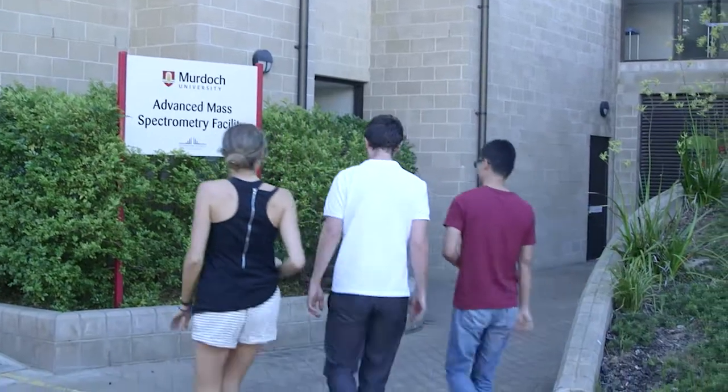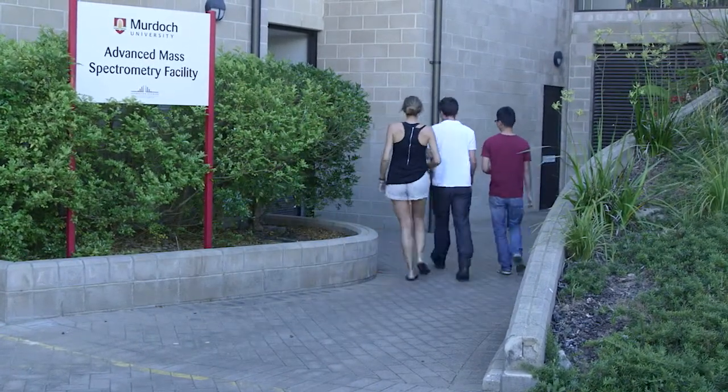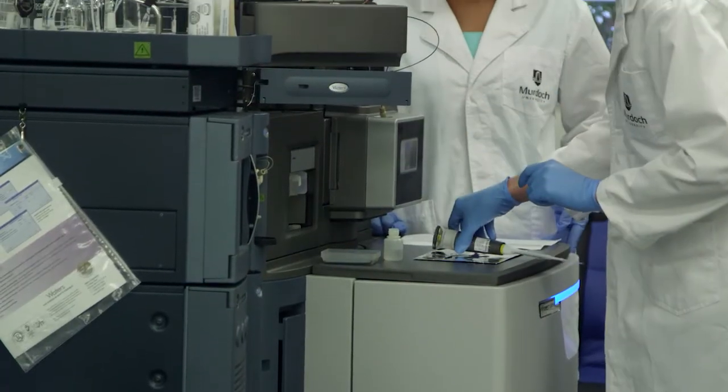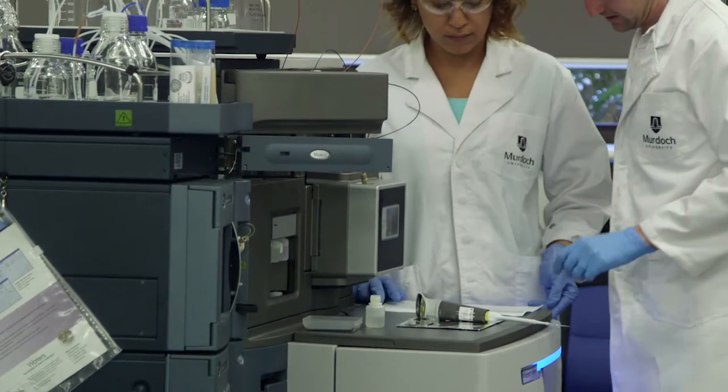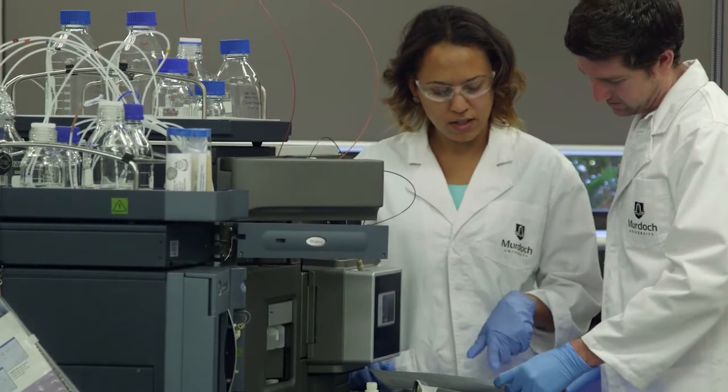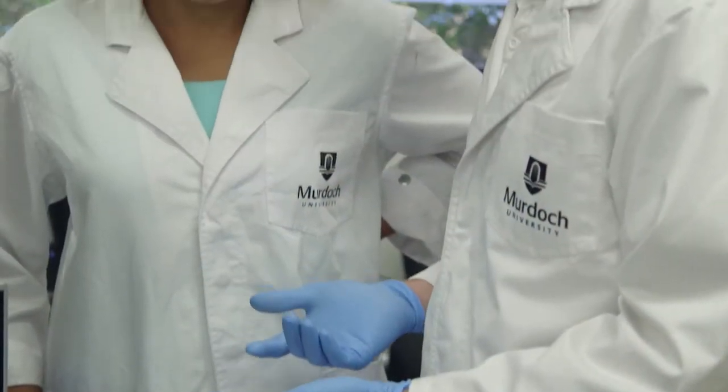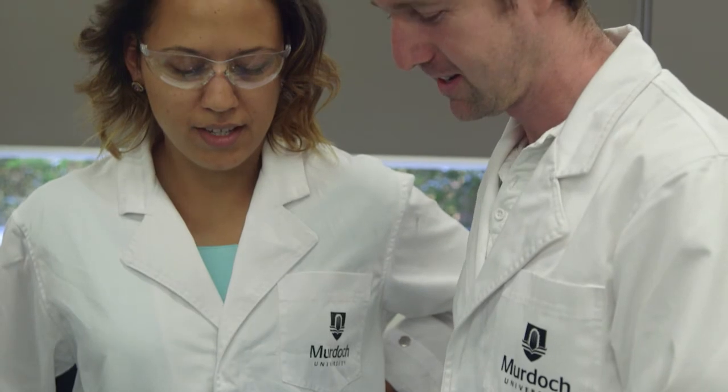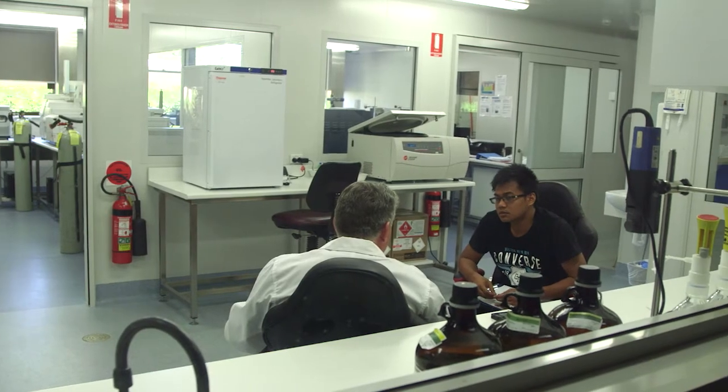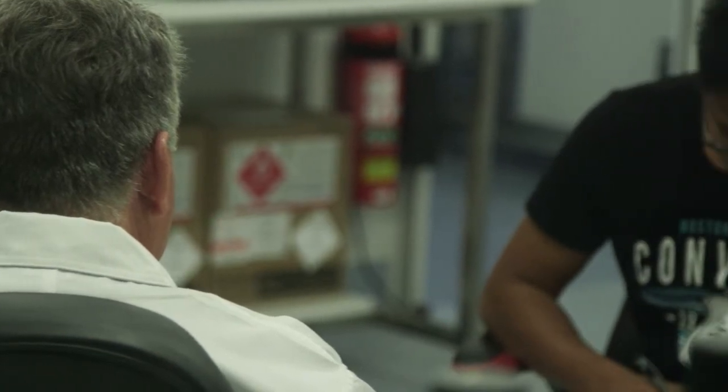The separation science and metabolomics laboratory is one of the important core facilities we have at Murdoch University. A key mark of the way in which the laboratory works is collaboration, and that collaboration is with researchers at university, with companies in Western Australia, with companies in Australia, and also with companies internationally. Of course, we have researchers at other universities and institutions around the world that we also collaborate with on a regular basis.